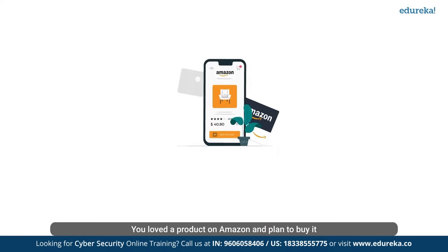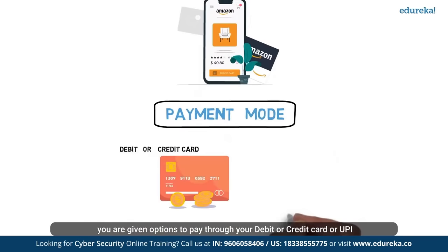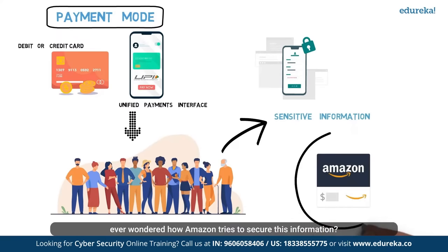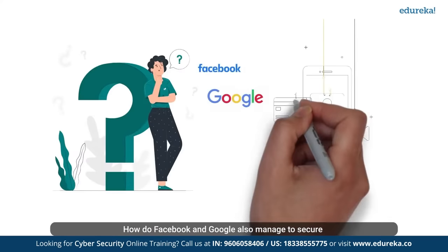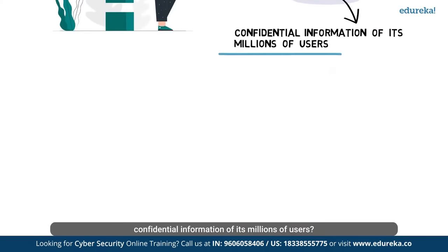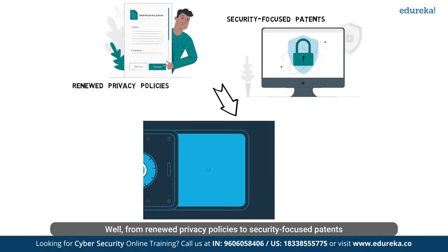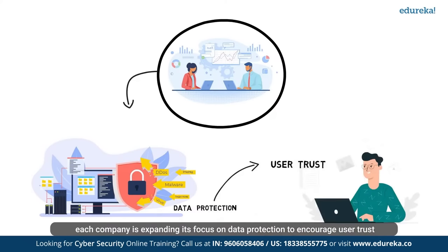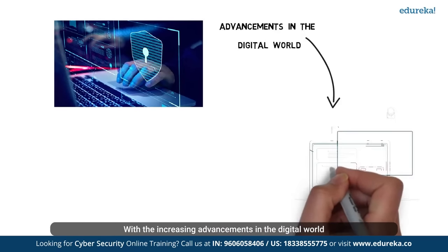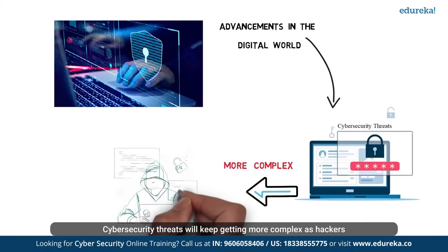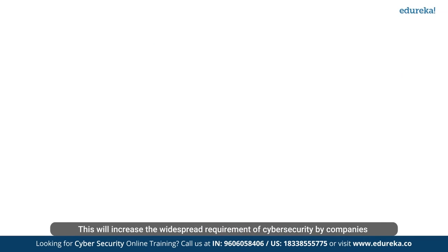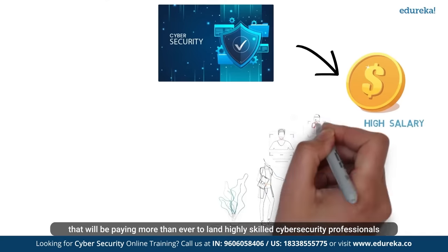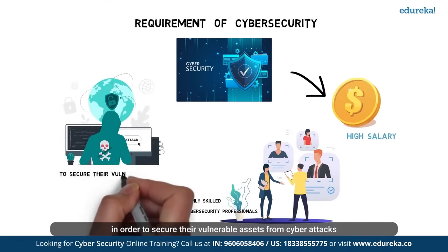You love a product on Amazon and plan to buy it — you're given options to pay through debit, credit card, or UPI. With millions of users sharing sensitive information over the platform, how does Amazon secure this? How do Facebook and Google manage to secure confidential information of millions of users? From renewed privacy policies to security-focused patents to the use of AI for data security, each company is expanding its focus on data protection to encourage user trust.